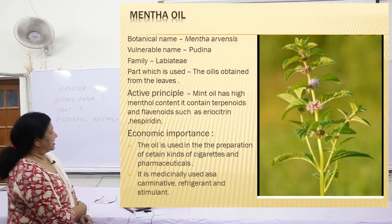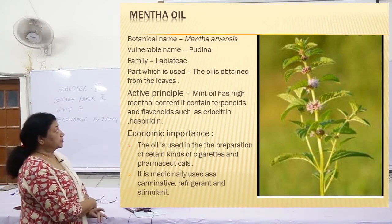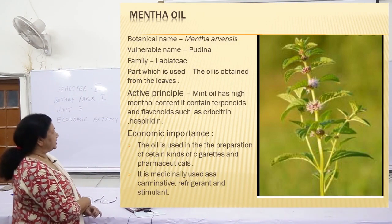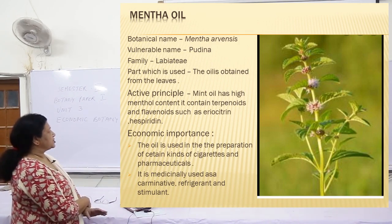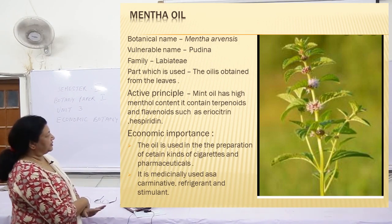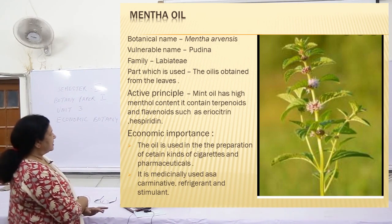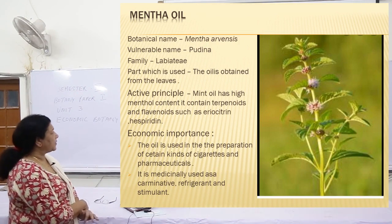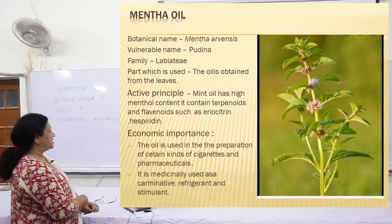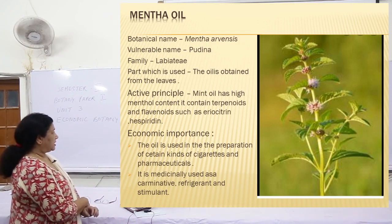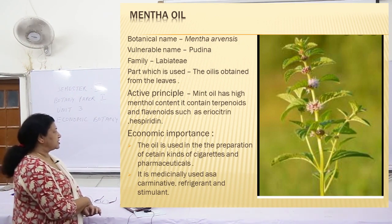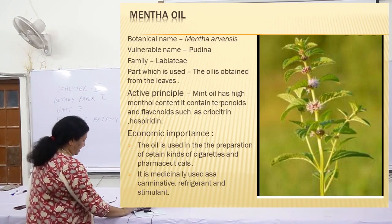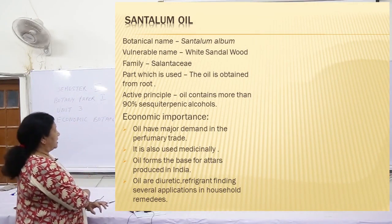Coming to mentha, that is pudina. Botanical name: Mentha arvensis. Vernacular name: pudina. Family: Labiateae. The part used: oil is obtained from the leaves. Mint oil has high menthol content which contains terpenoids and flavonoids such as eriocitrin and hesperidin. Economic importance: oil is used in preparation of cigarettes and pharmaceuticals. Medicinally used as a carminative, refrigerant and as a stimulant.